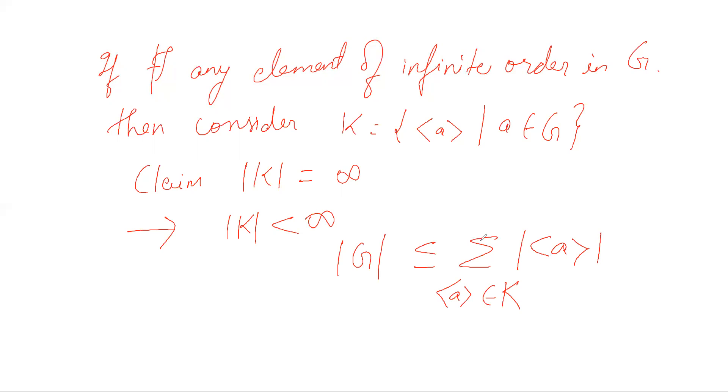Note that if K is finite, this is a finite sum. Since each element has finite order, each subgroup has finite order, and hence this sum will be finite, which implies |G| is finite, which is a contradiction.